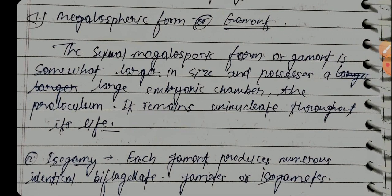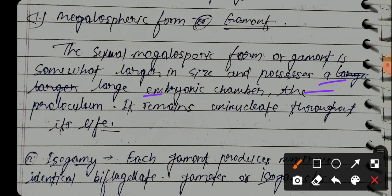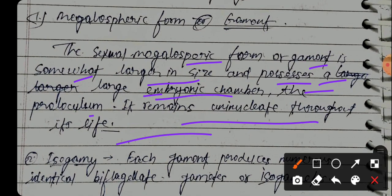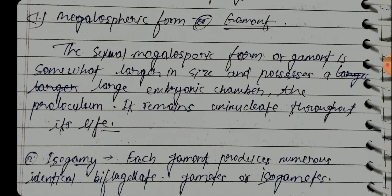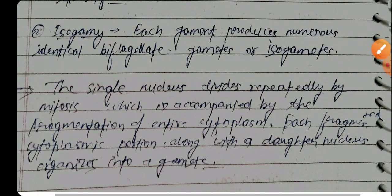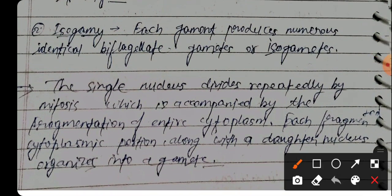The sexual megalospheric form, or gamont, is somewhat larger in size and possesses a large embryonic chamber called the proloculum. It remains uninucleate throughout its life.